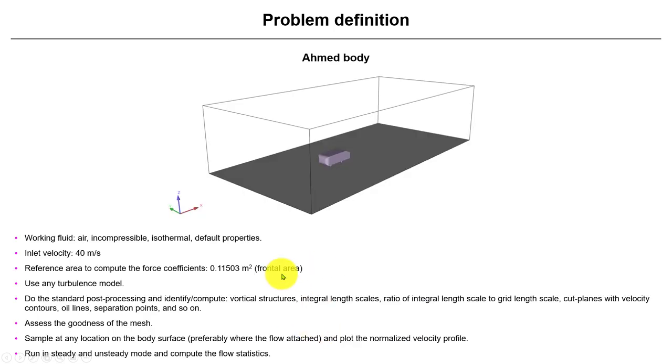Here you have the case with all the working conditions. Working fluid would be air, incompressible isothermal. Use the default properties. The inlet velocity is 40 meters per second. And remember that you will need to set something similar on the ground. You can also try running it with this one as a wall and you will see that there is a slight difference.